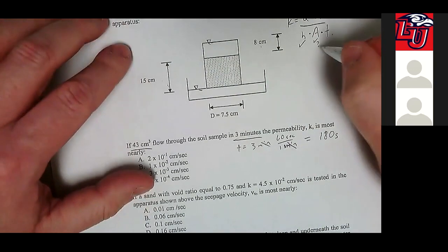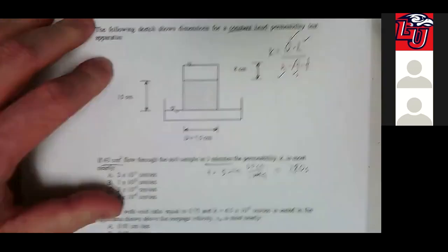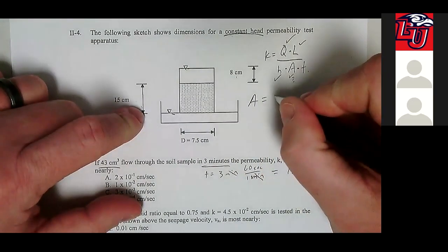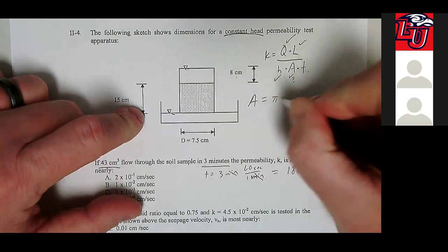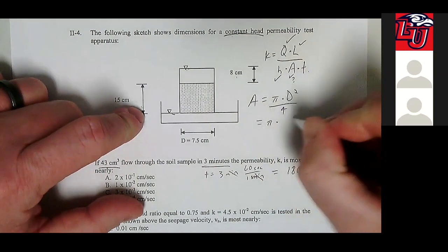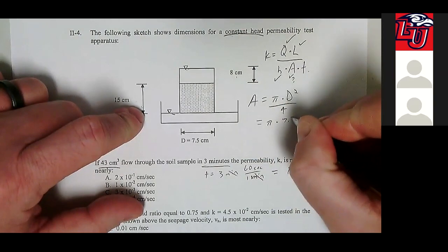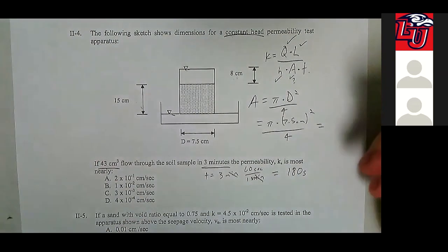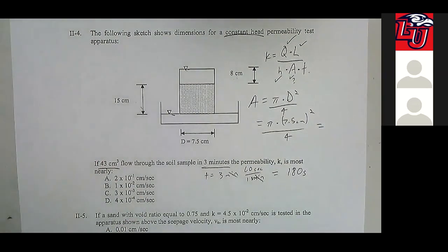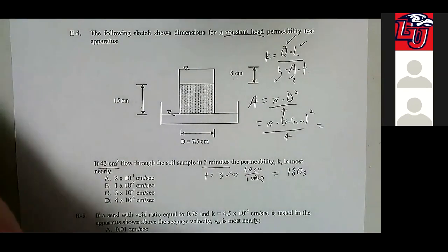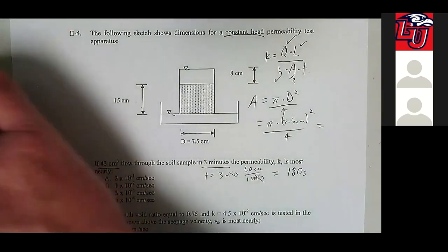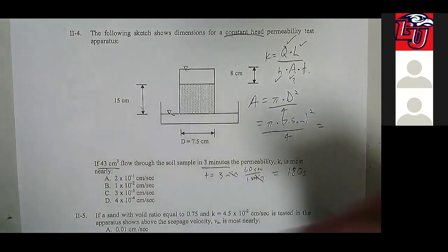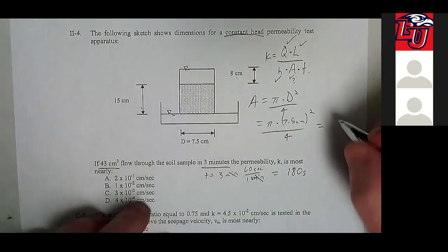A will need to be calculated to get the cross-sectional area. The area of a circle is pi d squared over four. So that's pi times 7.5 centimeters squared divided by four. Checking the math, that's 44.2 centimeters squared.